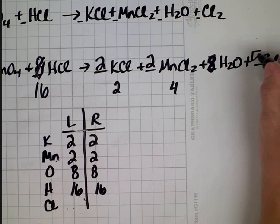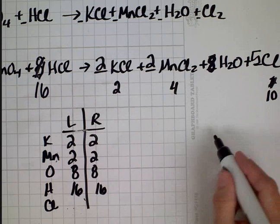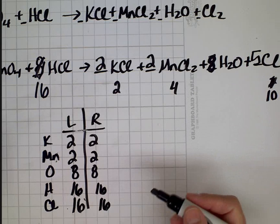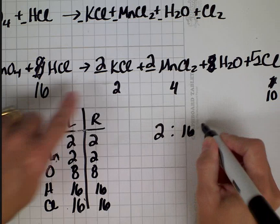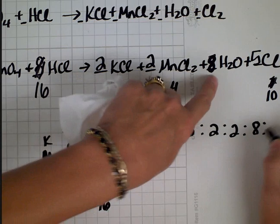I have 16 and 16. The last thing I want to do is I want to look at all my coefficients, two to 16, to two, to two, to eight, to five. And I look at those and ask, is there a number I can take out of them, kind of like reducing fractions. Because of this five, there's not. So to balance this equation, it's 2 KMnO4 plus 16 HCl.